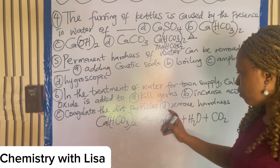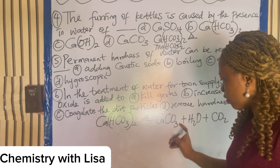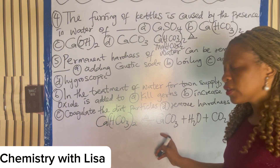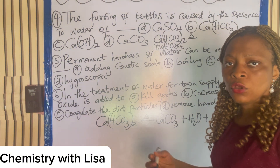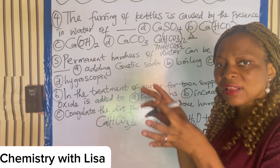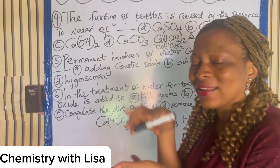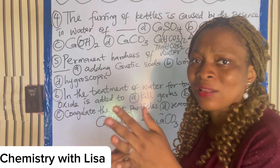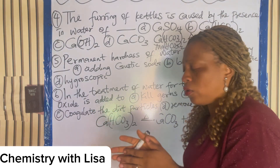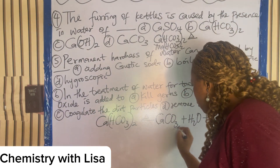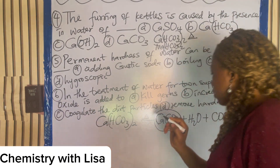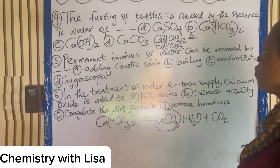What actually causes the furring is deposits of calcium carbonate, CaCO₃. Those deposits you see inside the kettle that make it a different color are caused by deposits of calcium carbonate. So the answer to the question is D.